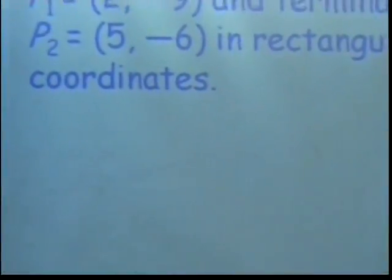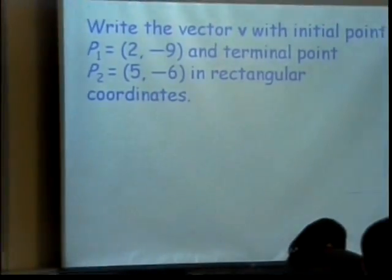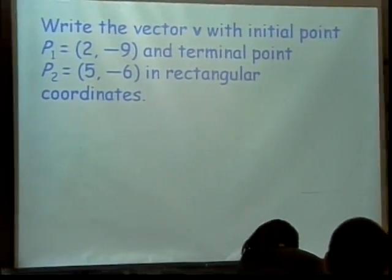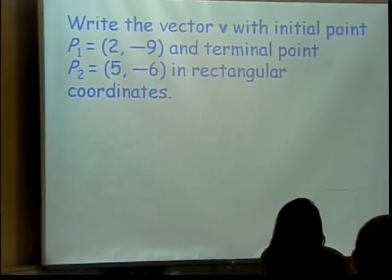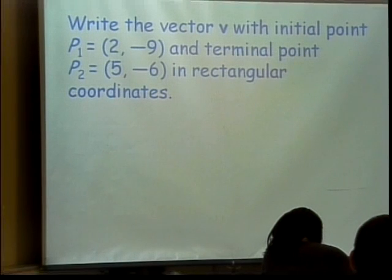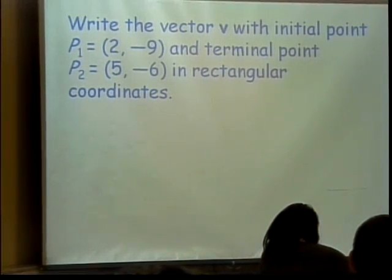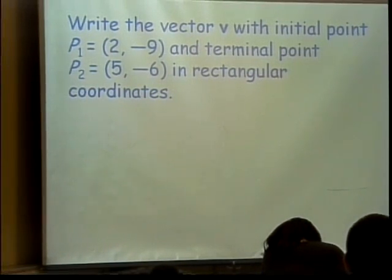We want to write the vector v, which has an initial point of 2, negative 9, and a terminal point of 5, negative 6 in rectangular coordinates. Okay. So, how do I get the a? What do I do?